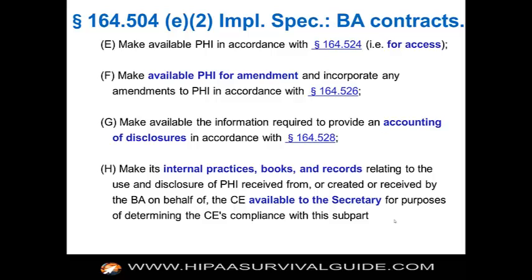Business associates will make their internal practices, books, and records relating to the use and disclosure of PHI received from or created by the BA on behalf of the CE available to the Secretary. In the model contract, these practices, books, and records should also be made available to the CE upon request and upon sufficient notice, so that the CE can perform the necessary due diligence to get the satisfactory assurances required.